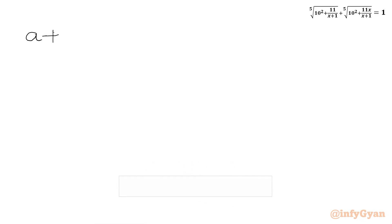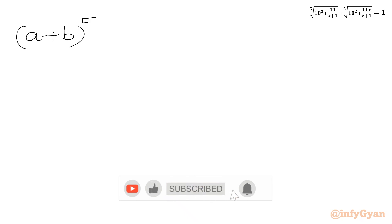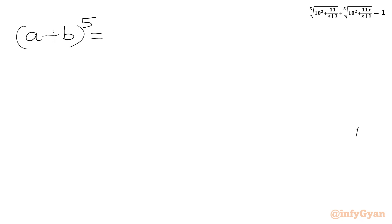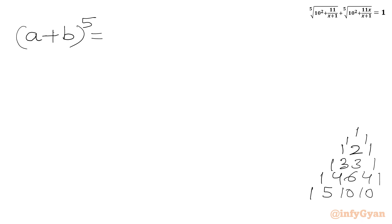I will use binomial expansion, so I need to expand (a+b)⁵. I will also use Pascal's triangle to find the coefficients. For power 2: 1, 2, 1. For power 3: 1, 3, 3, 1. For power 4: 1, 4, 6, 4, 1. And for the required power 5: 1, 5, 10, 10, 5, 1.